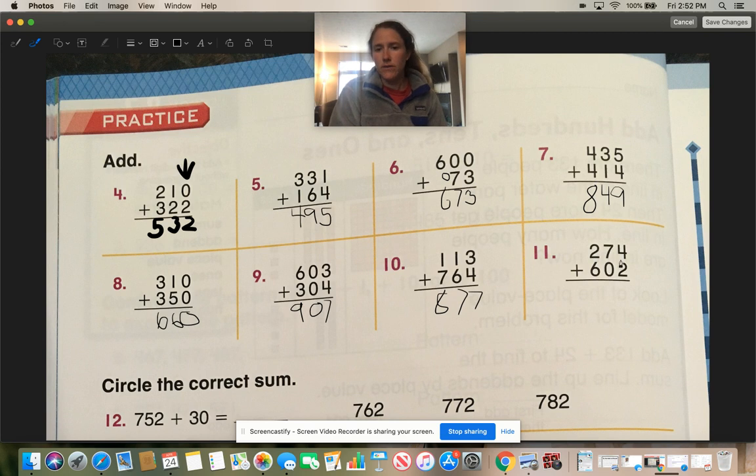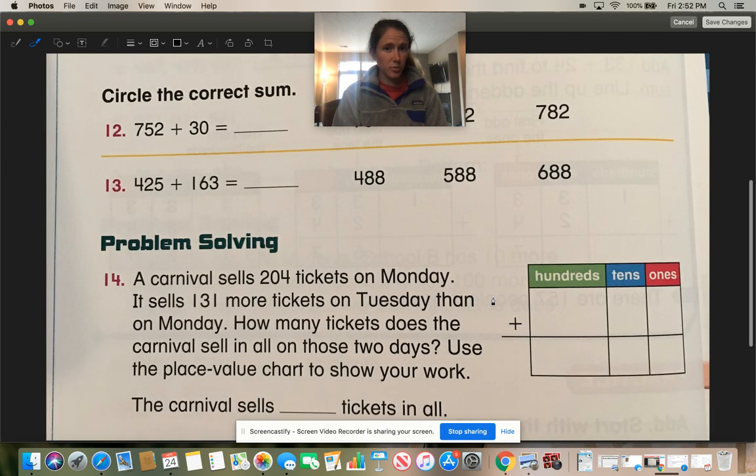Number 11: 4 plus 2 is 6. 7 plus 0 is 7. 2 plus 6 is 8. 876. How'd you guys do? Did you do pretty well?